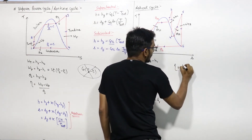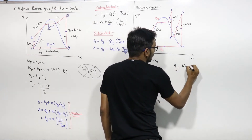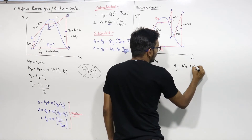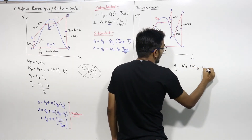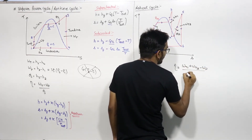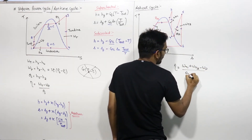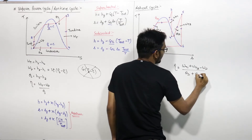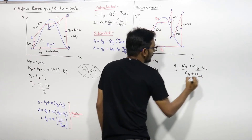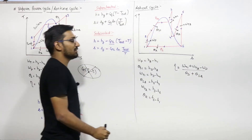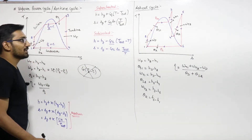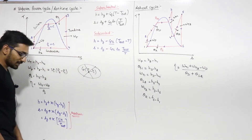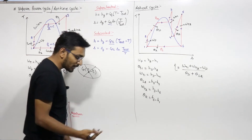Efficiency equals net work — that is work done by turbine 1 plus work done by turbine 2 minus work required by pump — divided by heat supplied 1 plus heat supplied 2. From here the efficiency is obtained.